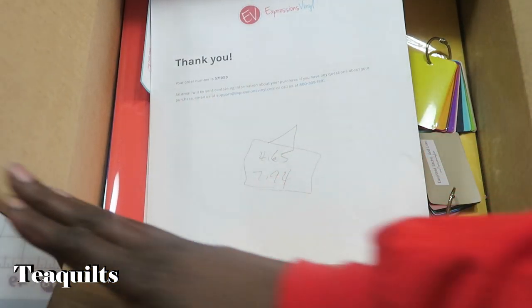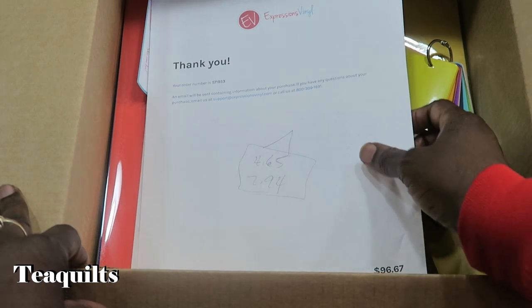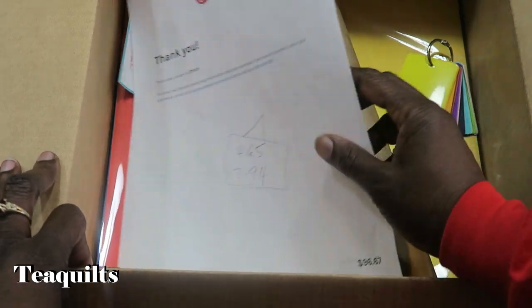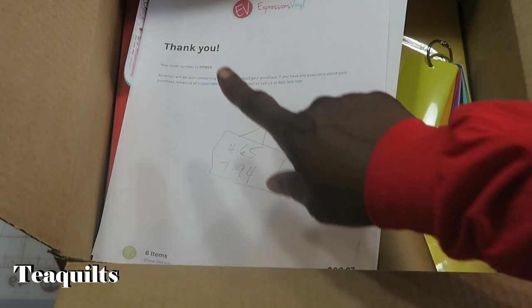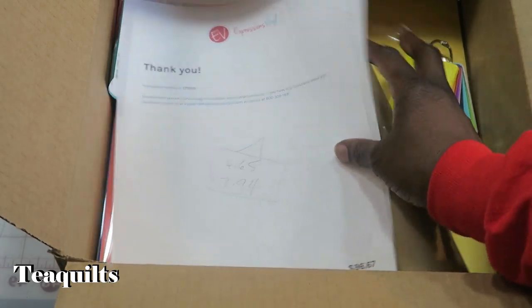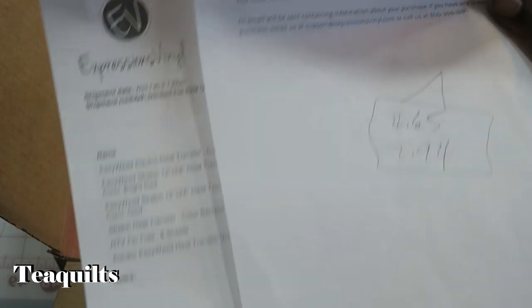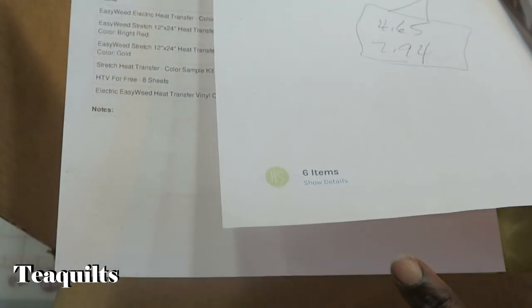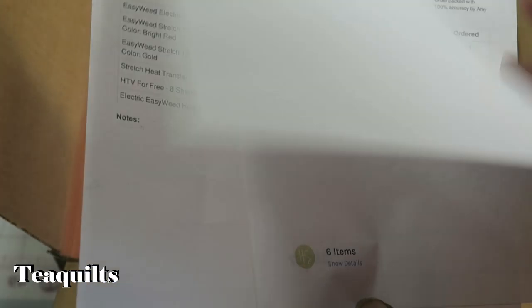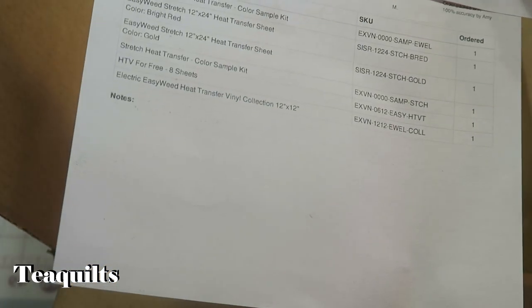So now this box here is where I normally purchase my vinyl from. It's Expressions Vinyl and you can go to ExpressionsVinyl.com. I will give you a link down below. So on top of your box they give you a thank you note for your order and they give you your order number, and then if you need support they give you a web address. And underneath that they have your actual order so that you can do comparison of what's in the box to what you should have had. It does not have any prices on this order so it's more of a packing slip.